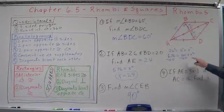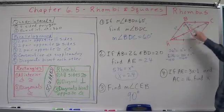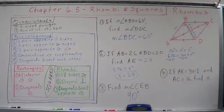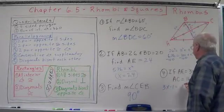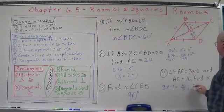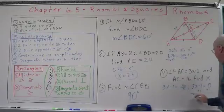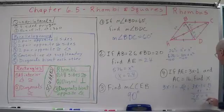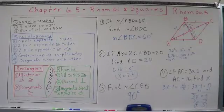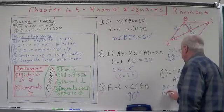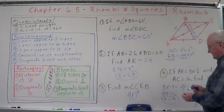This one is going to take a little work. If AE, half of this diagonal here, is 3x minus 1, and the whole diagonal is 16, find x. Well, AE, we said, was one half of that diagonal. So, we have 3x minus 1 equals 16 divided by 2. That is 3x minus 1 equals 8. Let's add 1. 3x equals 9. Divide by 3. x equals 3. Let's see if that's correct. 3 times 3 minus 1 equals 9 minus 1 equals 8. Half of 16 is 8.